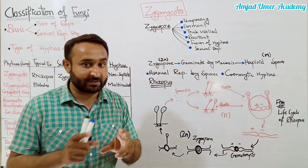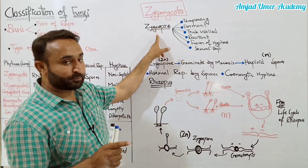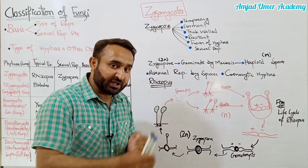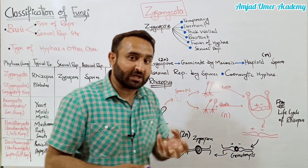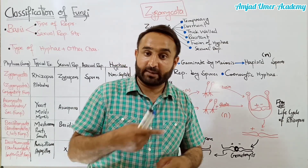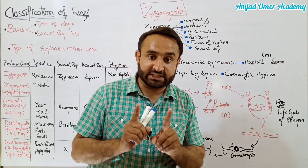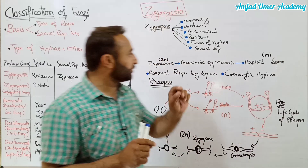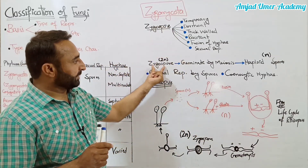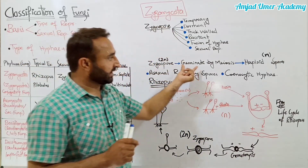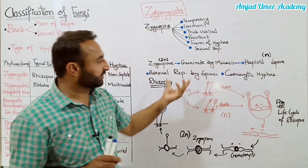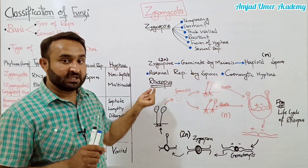Students, zygospores ke baare mein ye baat yaad rakhen: ye temporary stage hai. Jab ye germinate karega to meiosis hogi, aur jo naya plant banega wo reduction division yani meiosis se banega - wo haploid hoga. Fungi ki somatic life haploid hoti hai. Is liye zygospores kehte hain: yeh zygospore diploid hai. Jab ye germinate karega to meiosis karega, jiske natije mein haploid spores banen ge, aur wo haploid spores new plant body ko janam den ge.